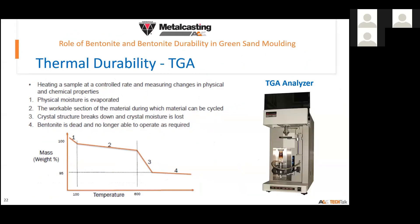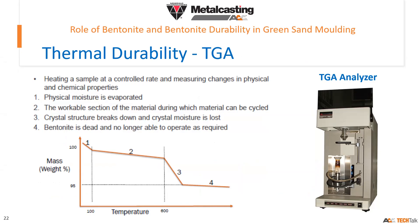We sample at a controlled rate and measure changes in physical and chemical properties. A typical TGA graph can be divided into four stages. The first stage involves physical moisture evaporation, with a little drop in mass over a temperature range. In the second phase, there is a workable range during which the material can be recycled.